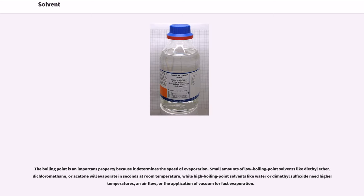The boiling point is an important property because it determines the speed of evaporation. Small amounts of low boiling point solvents like diethyl ether, dichloromethane, or acetone will evaporate in seconds at room temperature, while high boiling point solvents like water or dimethyl sulfoxide need higher temperatures, an airflow, or the application of vacuum for fast evaporation.